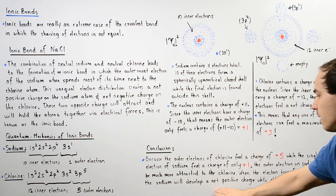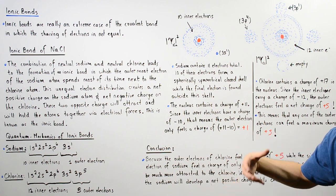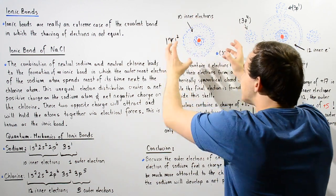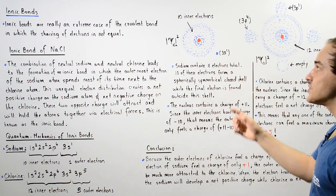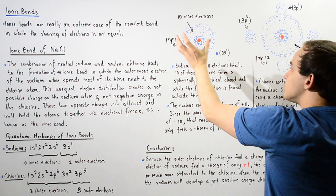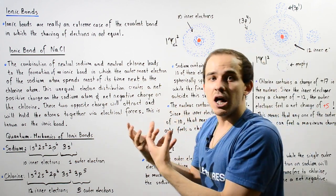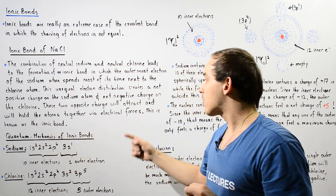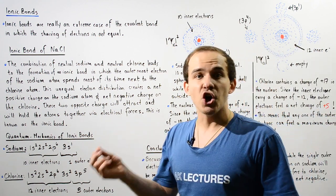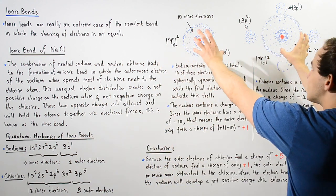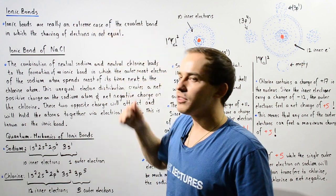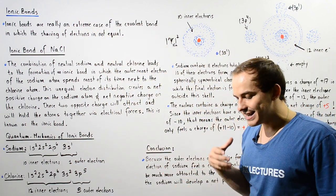The sodium will develop a net positive charge while the chlorine will develop a net negative charge. The sodium atom has only 10 electrons and 11 protons, so it has a net charge of positive 1. The chlorine has a charge of negative 1, and these opposite charges will attract one another as a result of electrical forces — and that is exactly what holds our two atoms together. This type of bond is known as an ionic bond, and the energy of this molecule will be lower than the combined energy of the sodium and the chlorine atom.